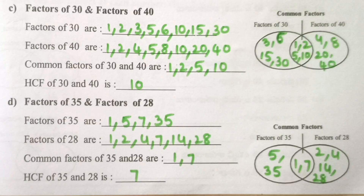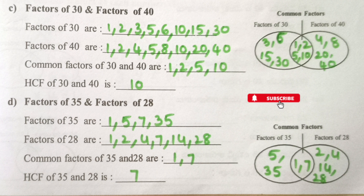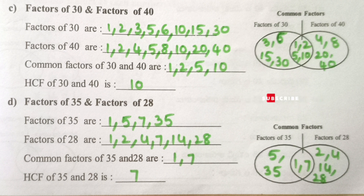Factors of 30 are 1, 2, 3, 5, 6, 10, 15, 30. Factors of 40 are 1, 2, 4, 5, 8, 10, 20, 40. Common factors of 30 and 40 are 1, 2, 5, 10. HCF of 30 and 40 is 10.